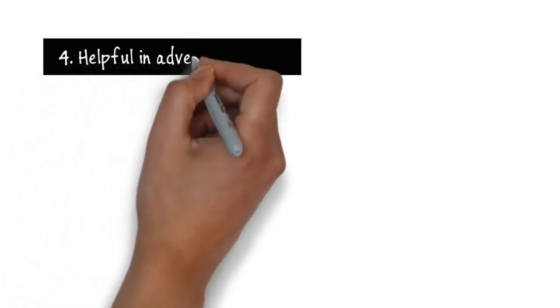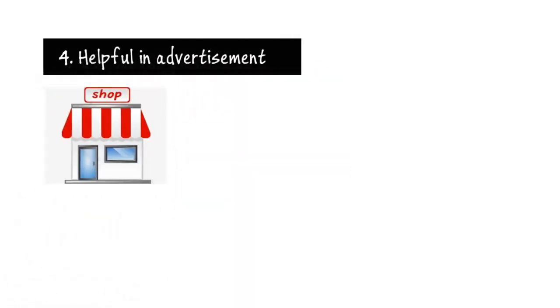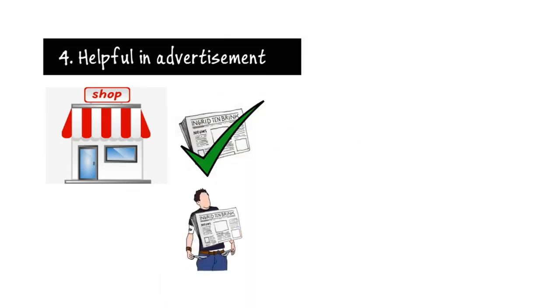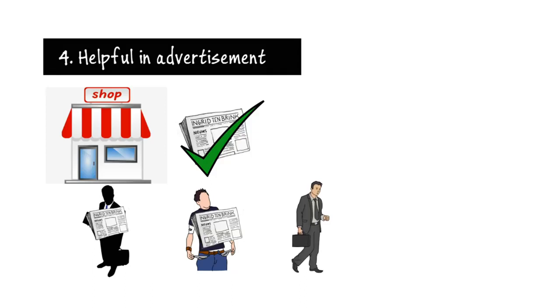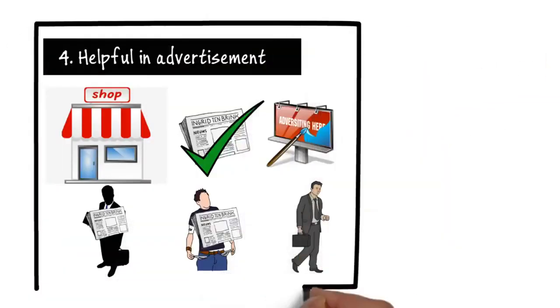Fourth is helpful in advertisement. For small enterprises, the newspaper is very helpful to advertise their product. Even a poor guy and a rich guy also buy a newspaper for reading, and hence a businessman can take advantage of it and advertise their product in the newspaper so that it can reach maximum number of people.